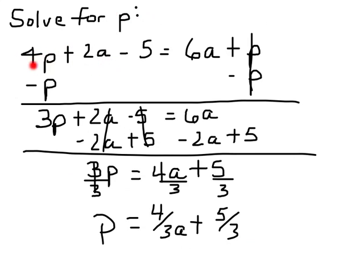That means we've got to get rid of everything over here except the p term. So we're going to subtract negative 2a and we're going to add 5, and we're going to do that on both sides.